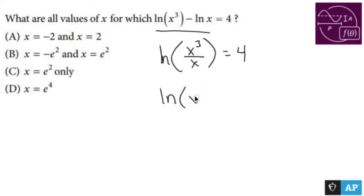This becomes ln(x²) = 4. Now you can rewrite this as e⁴ = x² because of those ln rules.